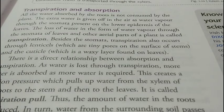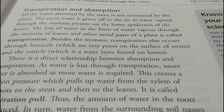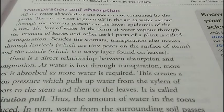There is a direct relationship between absorption and transpiration. As water is lost through transpiration, more water is absorbed as more water is required. This creates a suction pressure which pulls water from the xylem of the roots up to the stem and then to the leaves — this is called transpirational pull. Thus the water in the roots gets reduced; water from the surrounding soil passes into the root hair cells by osmosis, and the cycle continues.